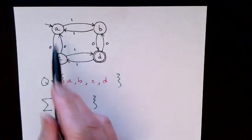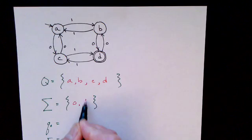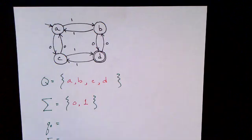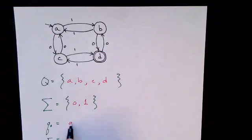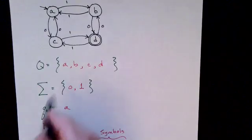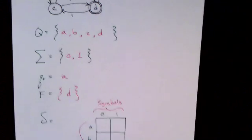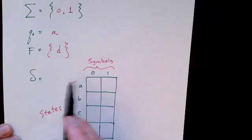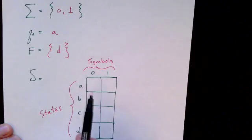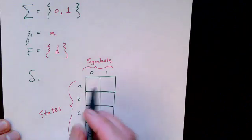We can see from the diagram that the only symbols in our alphabet are zero and one, because edges are labeled with zeros and ones, so there are only two symbols in our alphabet. Our initial state q zero is the state A. Our set of final states — there's only one state there — and that's D. Finally we have delta, our transition function. Since we have a finite number of states and a finite number of symbols, it's easiest to specify that function as an array.